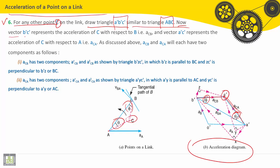Now vector B-C-Dash represents the acceleration of C with respect to B, ACB. And vector A-C-Dash represents the acceleration of C with respect to A, that's ACA.